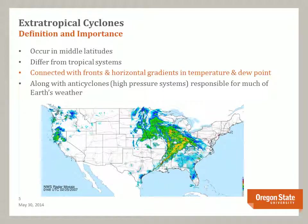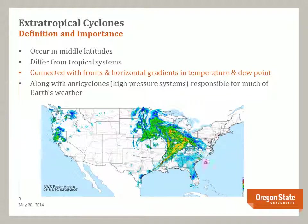Extratropical cyclones are connected with fronts and horizontal gradients in temperature and dew points. With our work on weather maps, air masses, and fronts, this image should be somewhat familiar. The different colors show various amounts of precipitation, and the boundaries between the colors and the white parts of the map are our fronts. This area of precipitation is a spectacular example of an extra-tropical cyclone that is moving across the central part of the United States.